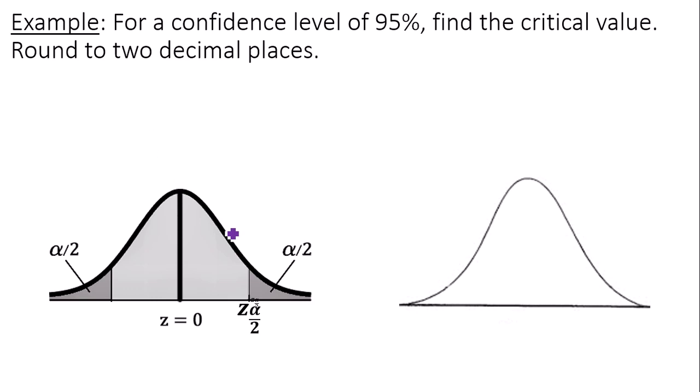A critical value is of the form Z sub alpha over 2. It means let's find the z-score or data value whose area to the right is alpha over 2. So if I have my bell curve, you can see the bell shape. Then I have this region to the right with area alpha over 2. I want to find the data value whose area to the right is alpha over 2.